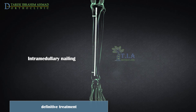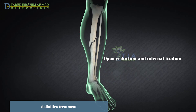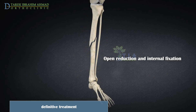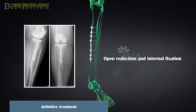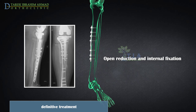Intramedullary nailing provides strong, stable, full-length fixation. Internal fixation with plates and screws is another option. During this operation, the bone fragments are first repositioned into their normal alignment and held together with screws and metal plates attached to the outer surface of the bone. Plates and screws are often used when intramedullary nailing may not be possible, such as for fractures that extend into either the knee or ankle joints, or in tibia fractures adjacent to existing implant hardware — for example, prior total knee arthroplasty.